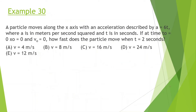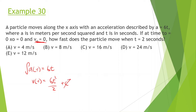Let's look at the next example. A particle moves along the x-axis with acceleration a = 6t, where a is in meters per second squared and t is in seconds. At t = 0, position equals 0 and initial velocity equals 0. How fast does the particle move at t = 2 seconds? Taking the integral of acceleration gives velocity: 6t²/2 + c. Since initial velocity is 0, c = 0. Plugging in t = 2: 4 × 6 / 2 = 12 meters per second.